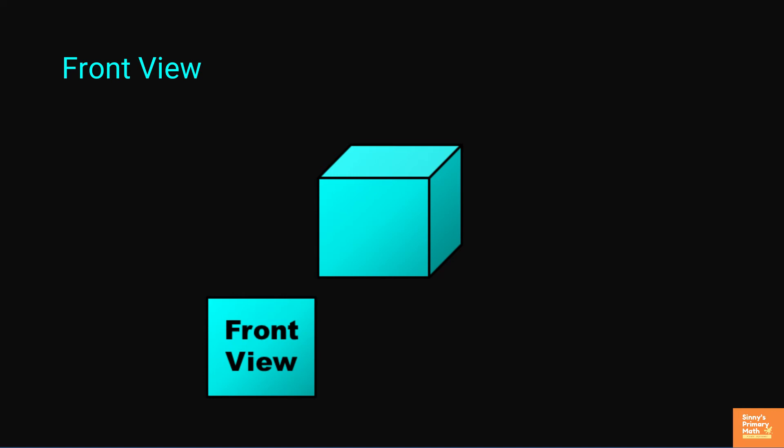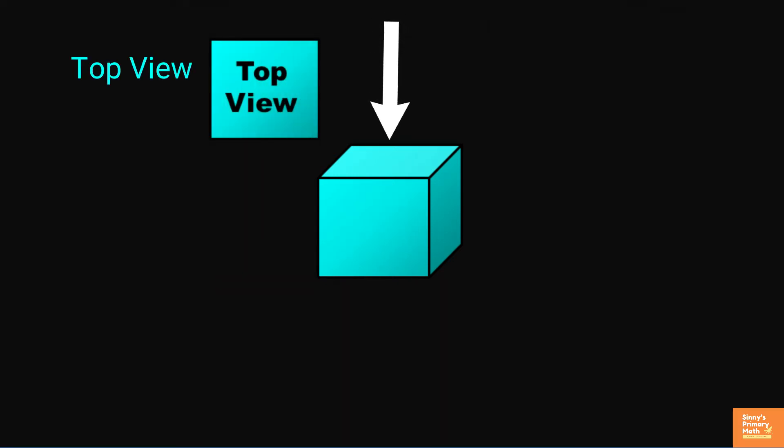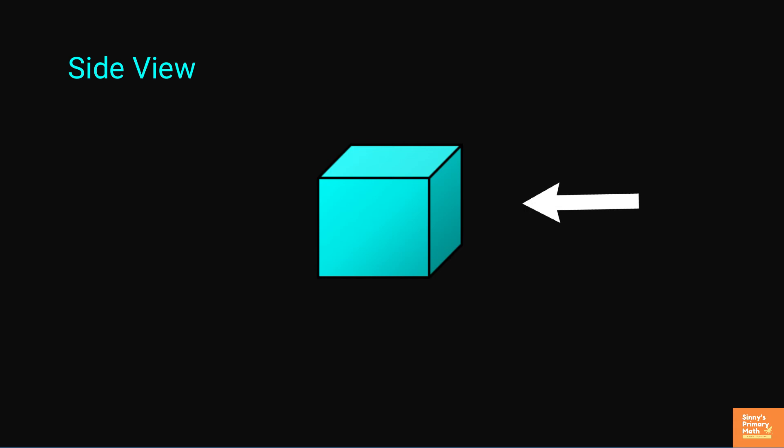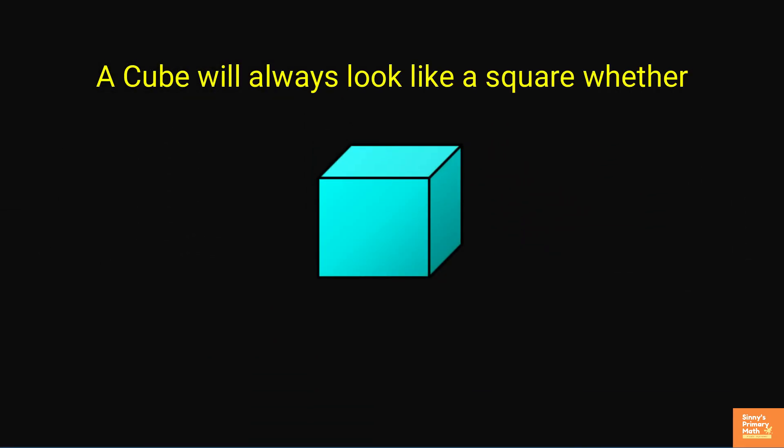Now, look at the cube. We shall look at the top view, side view, and front view. Always see a front face which is a square. A top view is also a square. This is the side view, left and right of the cube, which is also a square. A cube will always look like a square, whether it is front view, side view, or top view.